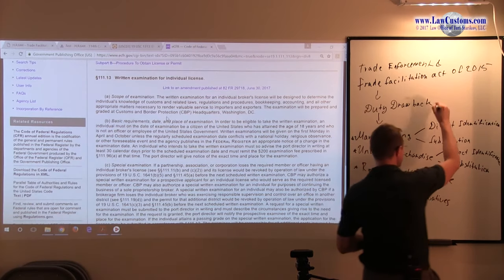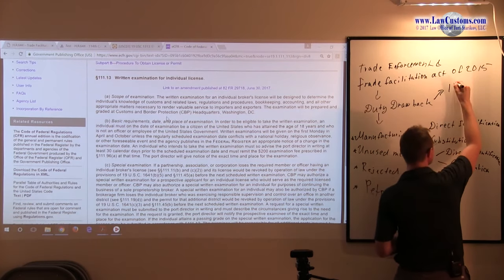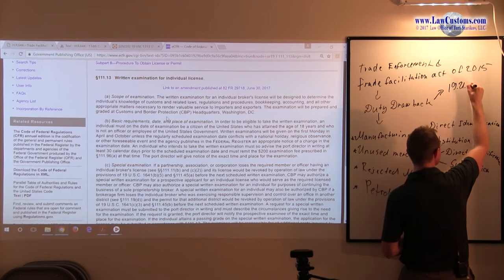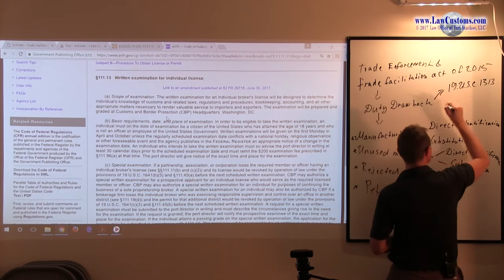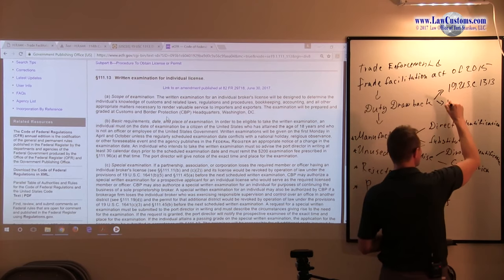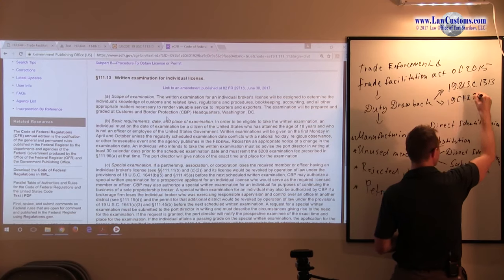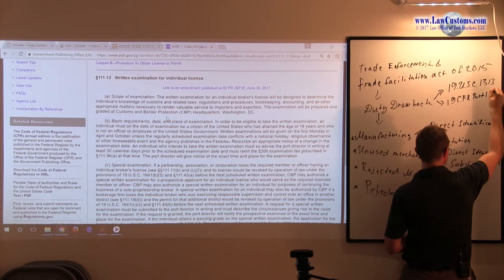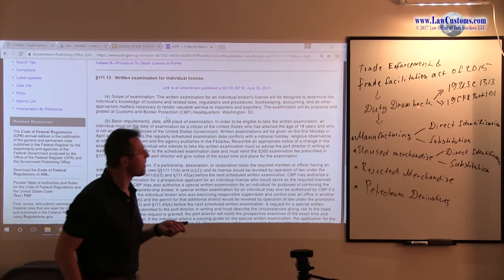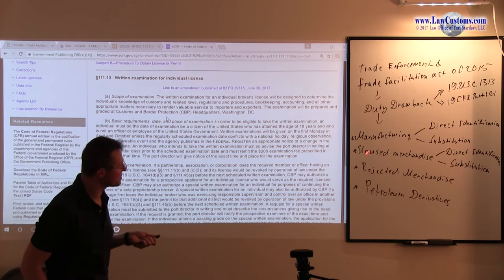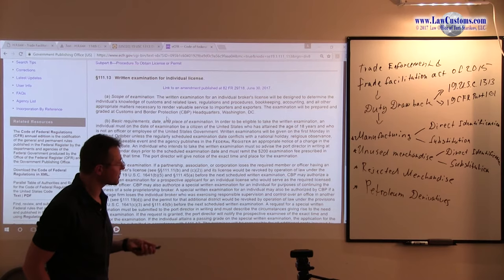So, we will dive into the details of what's required for each one of them respectively. For now, let's just set up the general framework, and this general framework will allow us to jump into the details as we go. But this is overall frame. Now, as far as legal text is concerned, you are dealing with 19 USC, United States Code 1313, which has been implemented in a federal regulation title 19, Code of Federal Regulations, Part 191.